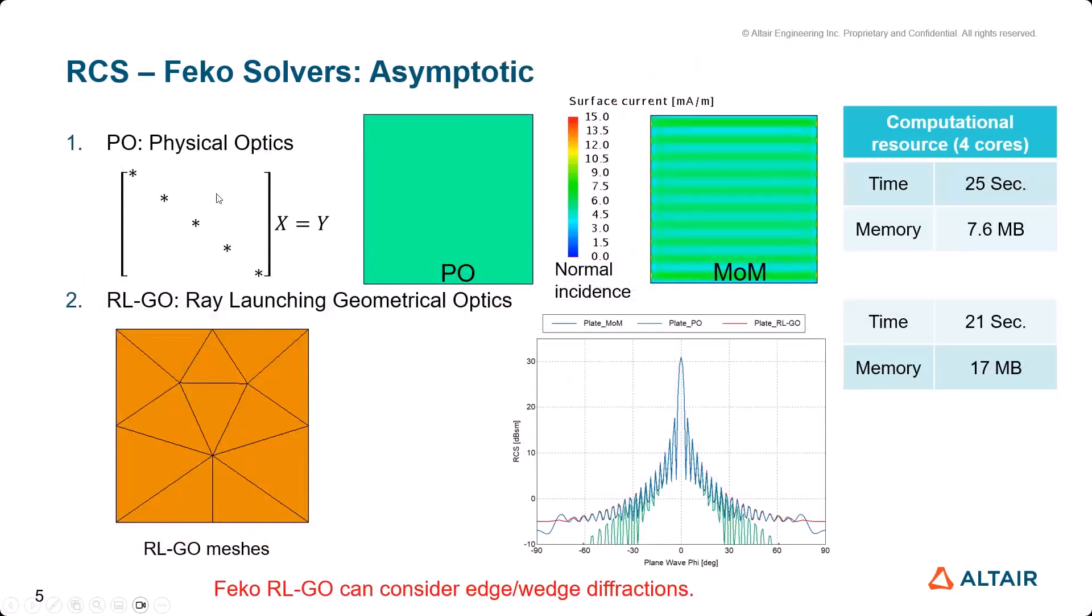PO only considers diagonal terms of the impedance matrix, so that's why PO generates uniform current when at normal incidence compared to the MOM current. RL-GO generates a very small number of meshes compared to MOM.